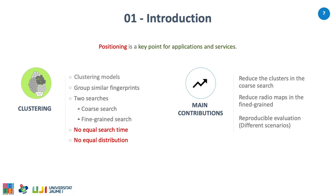Although k-means provides a good tradeoff between the two dimensions, we identified two main problems. First, the search time is not equal in each defined cluster. And second, the fingerprints might not be equally distributed among the clusters. Therefore, it is not computationally efficient.